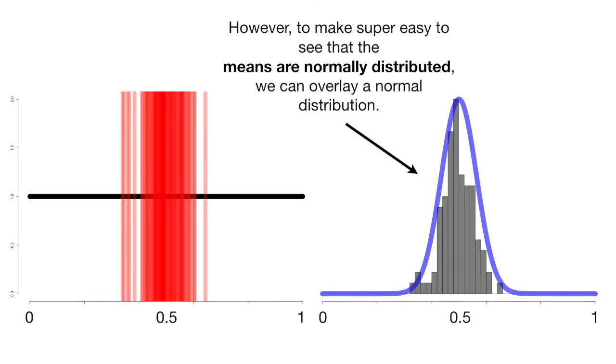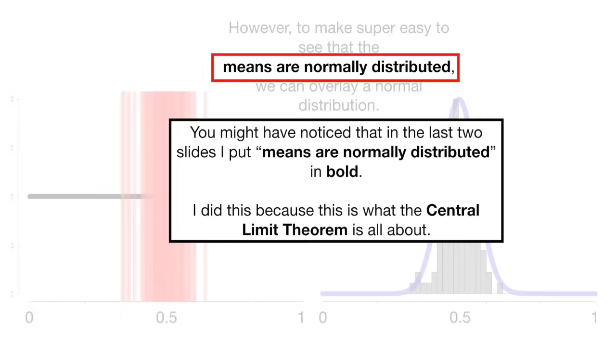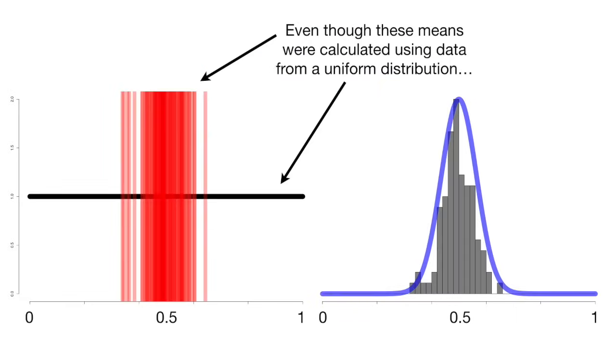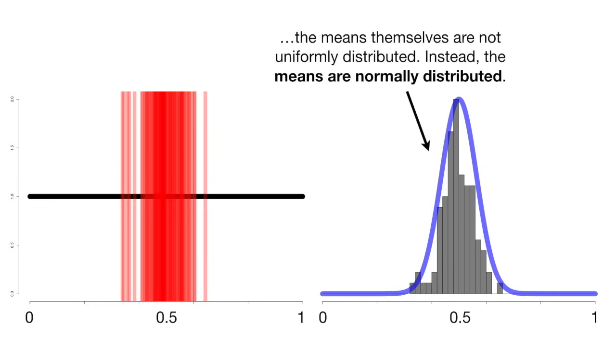However, to make it easy to see that the means are normally distributed, we can overlay a normal distribution. You might have noticed that in the last two slides, I put means are normally distributed in bold. I did this because this is what the central limit theorem is all about. Even though these means were calculated using data from a uniform distribution, the means themselves are not uniformly distributed. Instead, the means are normally distributed. Bam!